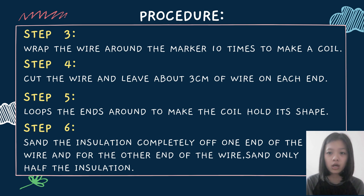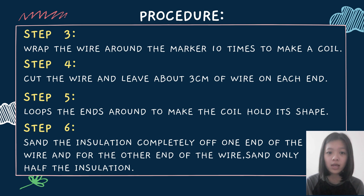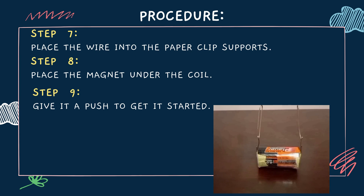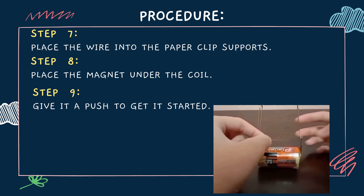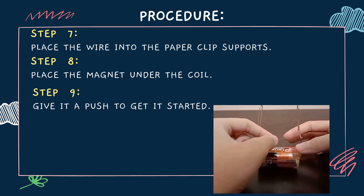Sand the insulation completely off one end of the wire, and for the other end of the wire, sand only half the insulation. Now, place the wire into the paper clip supports.